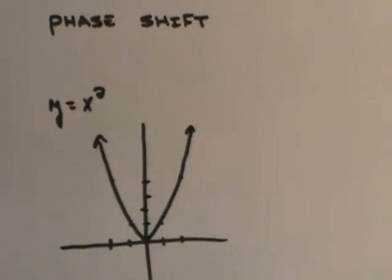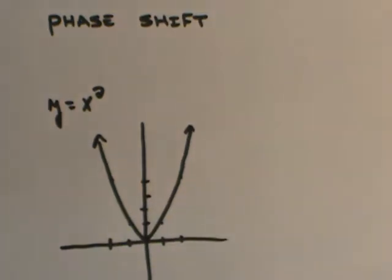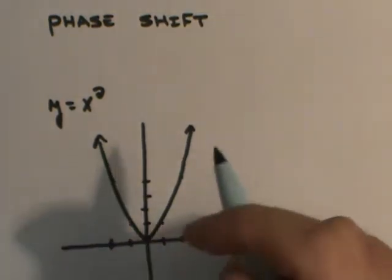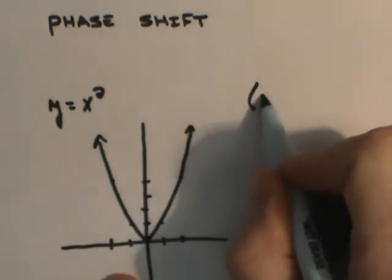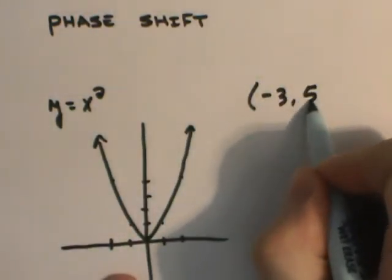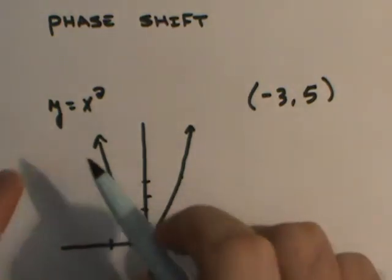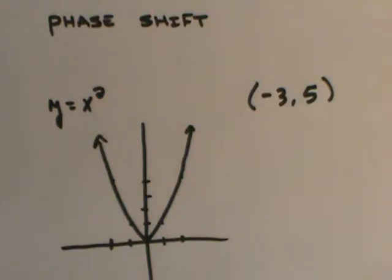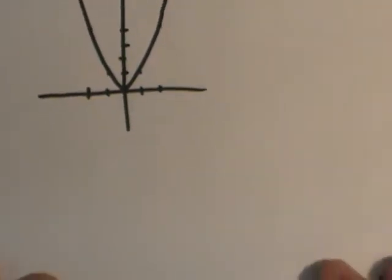Now what a phase shift does is it allows you to take this graph and move it anywhere you want on the Cartesian coordinate plane. So in other words, if I wanted this parabola to now have a vertex at negative three, five, essentially what I have to do is grab the parabola and move it to the left three units and up five units and have a new parabola, a new placement for my parabola.